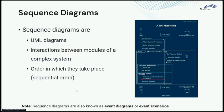Sequence diagrams show the interaction between different modules in a system. For example, in an ATM machine, a user interacts with the app, and the app interacts with the database to get account details. The sequence diagram shows the order in which these interactions take place — what happens first and then what follows — and also indicates when a particular module is active. This is also called an event diagram or event scenario.